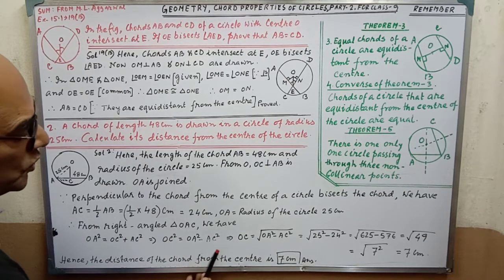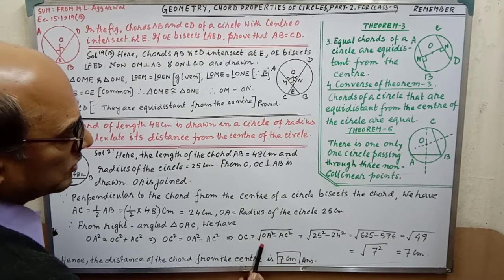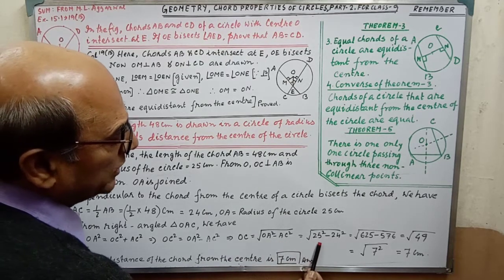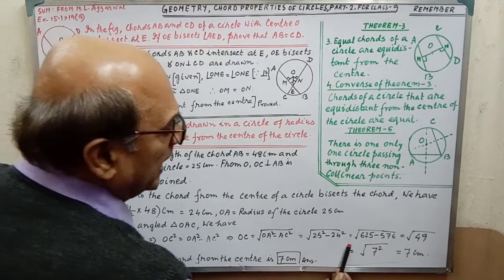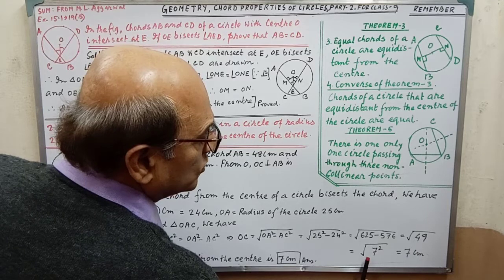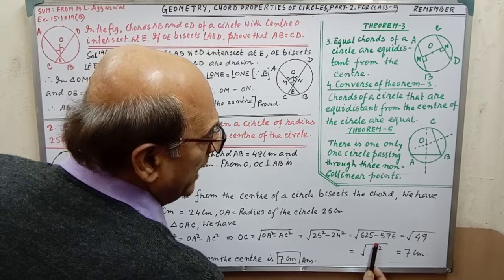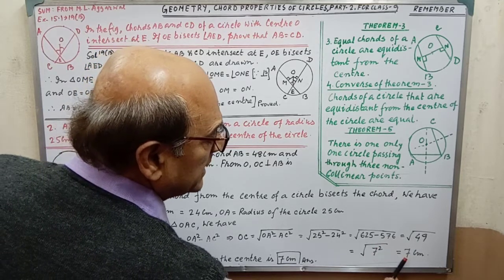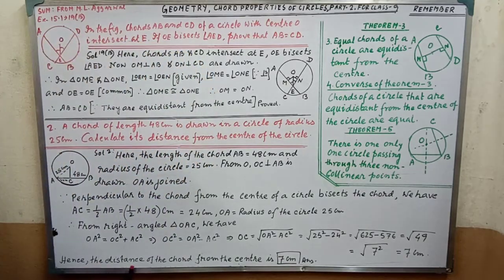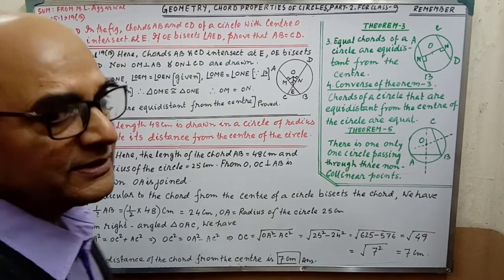And simplifying this, we are getting OC equal to root over OA square minus AC square. After that, by putting the value, we are getting root over 49. Then root over 7 square. Root and square will be eliminated, then it will be 7. Therefore, the distance of the chord from the center is 7 cm.